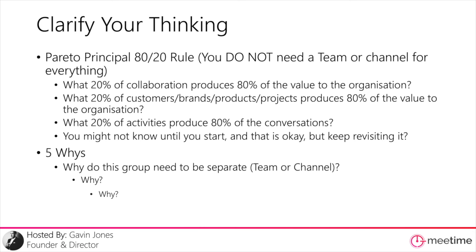What 20% of customers, brands, products, or projects produces 80% of the value? Start with those and build out the rest around that. What's the 20% of activities that produce 80% of the conversations — the processes people moan about? The other useful model is the five whys, which is literally asking why five times. One why you might ask as you go through structures is: why do you need this group of people to be separate? If someone says we can't combine these teams, ask why do you need to be separate, and then keep asking why after every answer to drive down to the root cause.